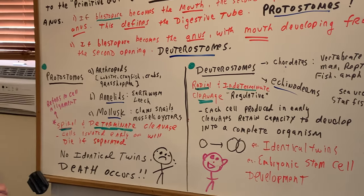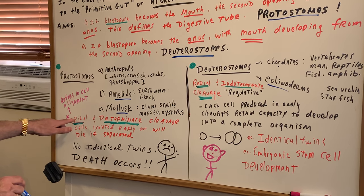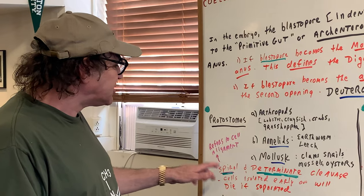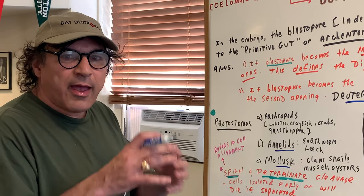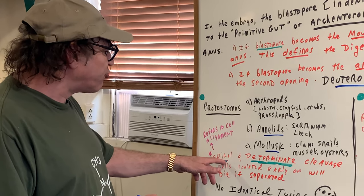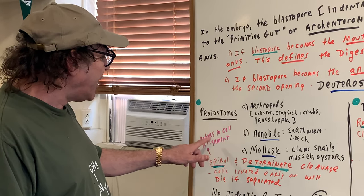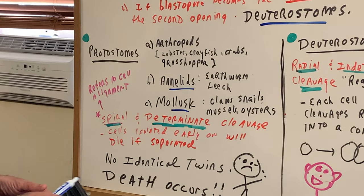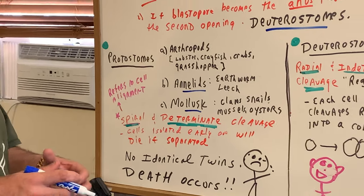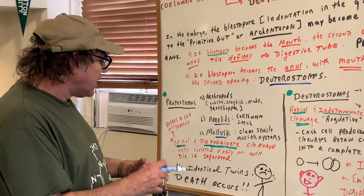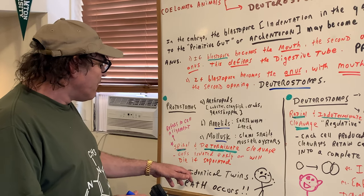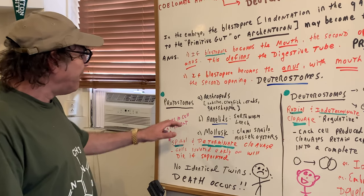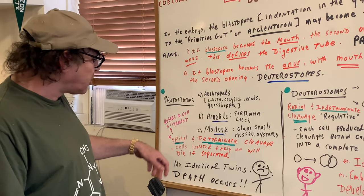Protostomes undergo what we call spiral and determinant cleavage. Spiral cleavage refers to the cell alignment — how the cells are positioned once cell division occurs. When I say it's also determinant, that means cells isolated early on will die if separated. So if you go from one cell to two cells to four cells, and you separate those cells early at the two-to-four cell stage, they would die. No identical twins can occur — death will occur. This is what happens in protostomes: determinant as well as spiral cleavage.